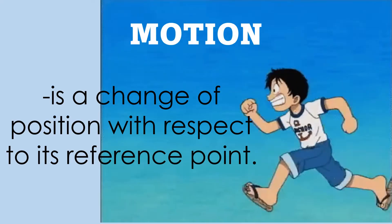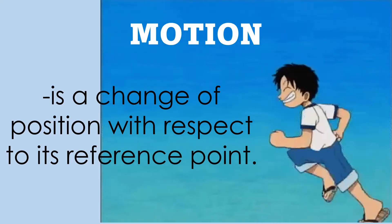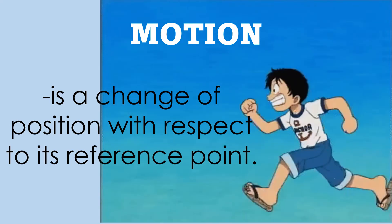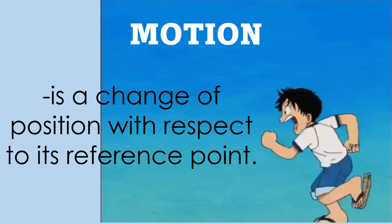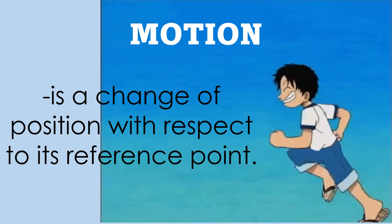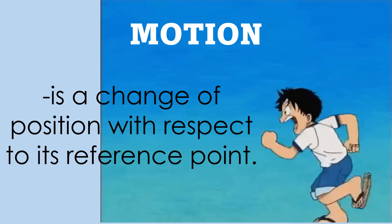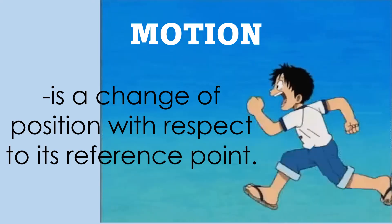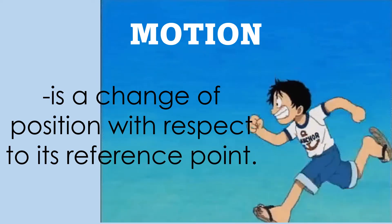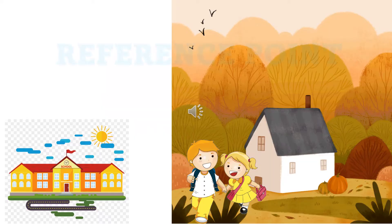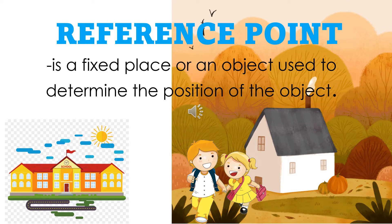By definition, motion is a change of position with respect to its reference point, meaning there is motion if you change your position from one place to another. On the other hand, we define reference point as a fixed place or object used to determine the position of the object.